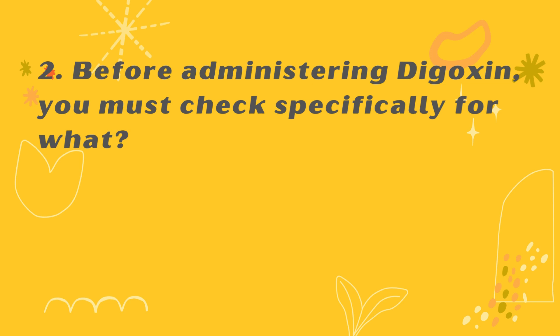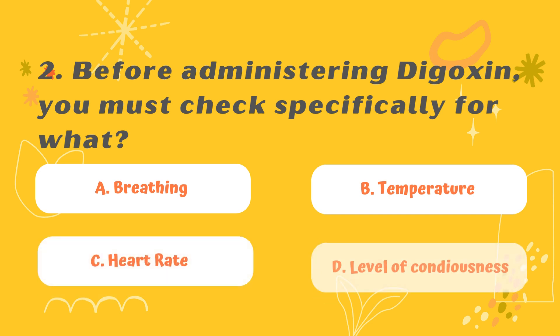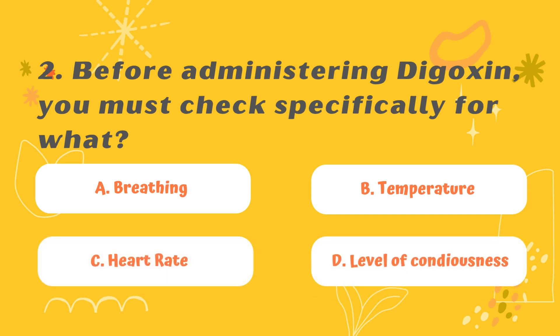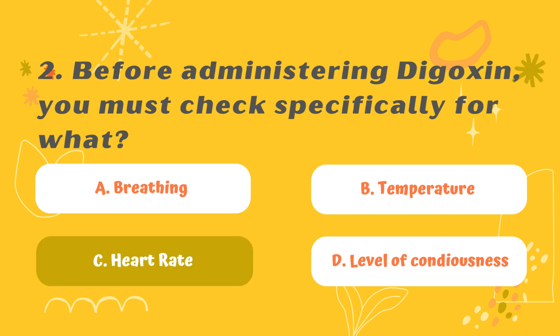Question 2: Before administering Digoxin, you must check specifically for what? Option A: Breathing. Option B: Temperature. Option C: Heart Rate. Option D: Level of Consciousness. The correct answer is C.